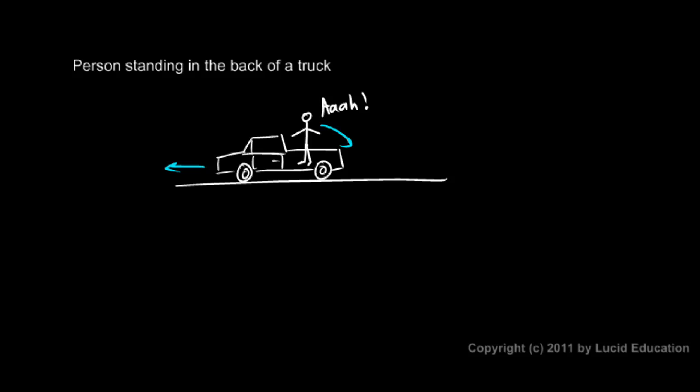The person doesn't really fall backwards like this arrow represents. Now you could think of it as the person falling backward relative to the truck. If you think of the truck as the frame of reference, then certainly the person falls backwards relative to the truck. But if you think of this from the point of view of the ground, if the ground is your frame of reference, then you see this person standing here, the feet get pulled forward, and the rest of the person tends to get left behind.